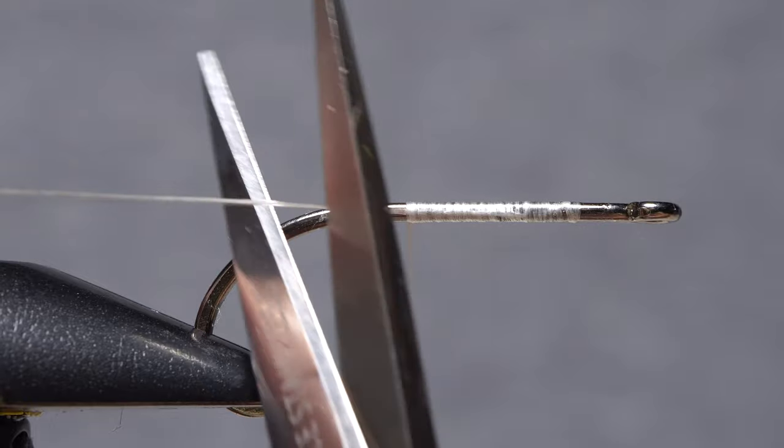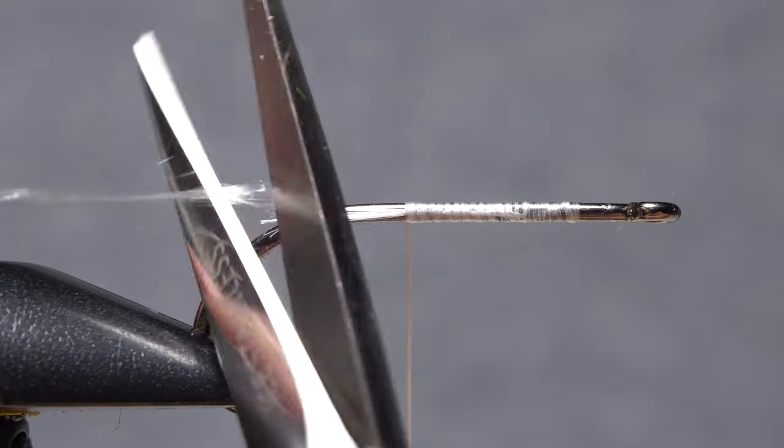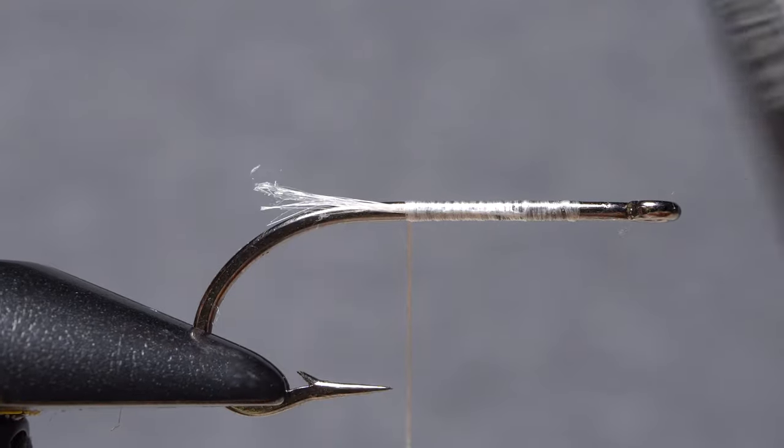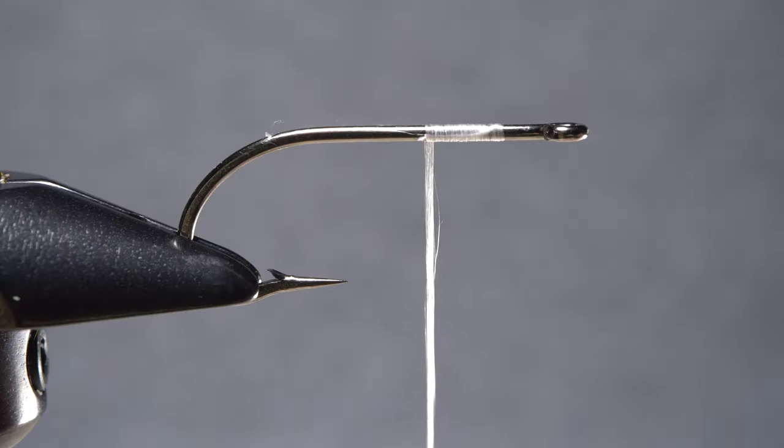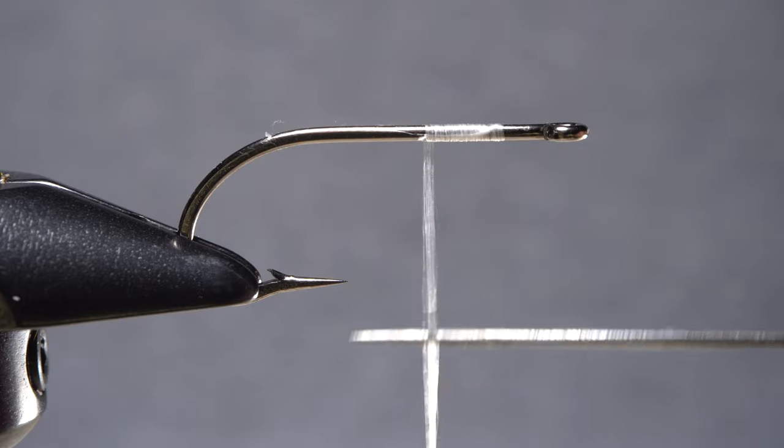In addition, cutting gel spun threads, even with very sharp tying scissors, can be an exercise in frustration. I've started using a double-edged razor blade instead. Gel spun threads flatten out until they are remarkably thin.